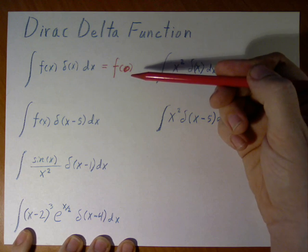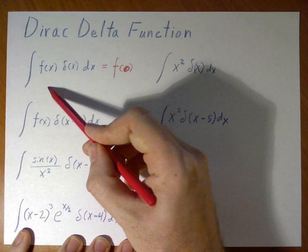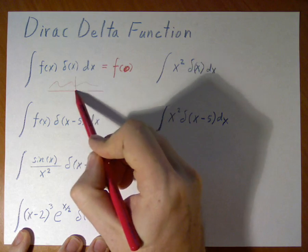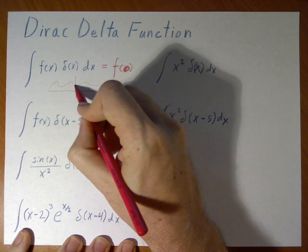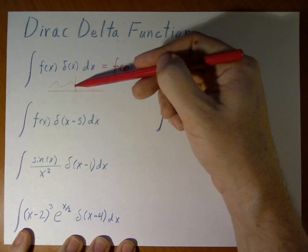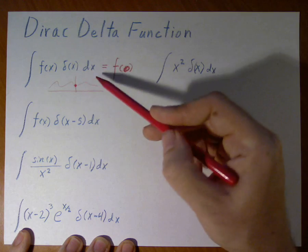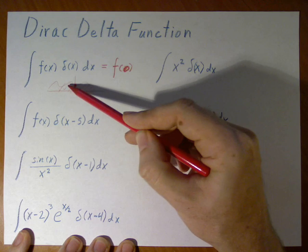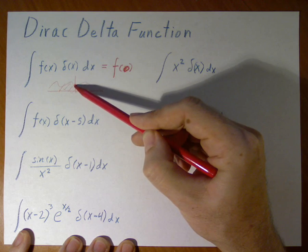That's because when we're evaluating whatever f of x is, we only care about what it is at the point where the Dirac delta function is. Because we don't care about integrating the rest of this, we only care about the single value right there.